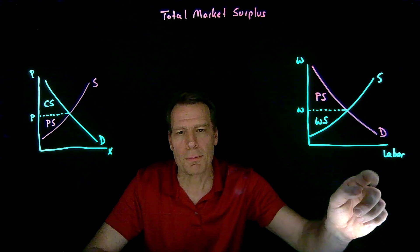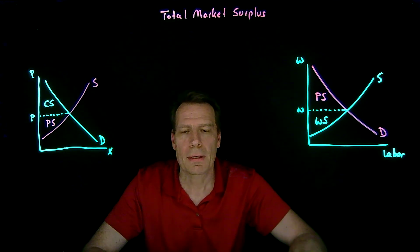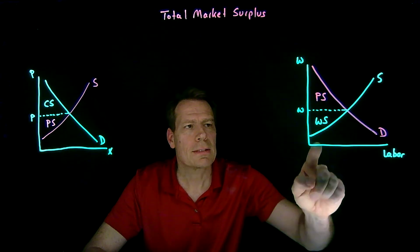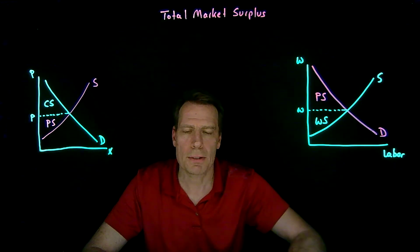So in the labor case, it would be the good leisure. So unless tastes are quasilinear in leisure, this is actually not the right curve to measure worker surplus on.